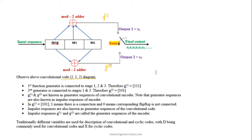Let us consider a 2,1,2 convolutional encoder. It has two outputs. The first generator function is connected to all stages of the encoder, so the tap gains are one, one, one — giving generator sequence g1 as 1,1,1. For the second generator, the first stage and last stage are connected but the second stage is not, giving g2 as 1,0,1. Here g1 and g2 are known as generator sequences of the convolutional encoder.